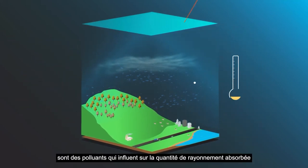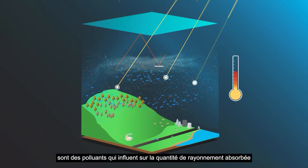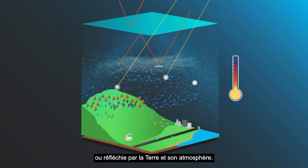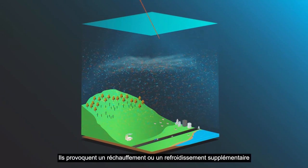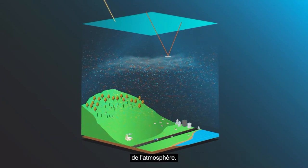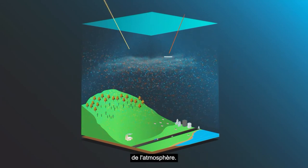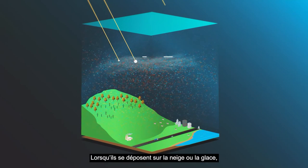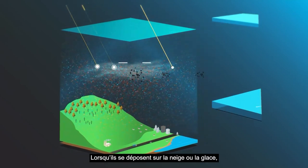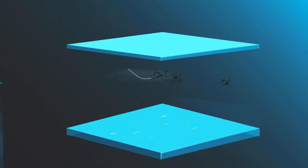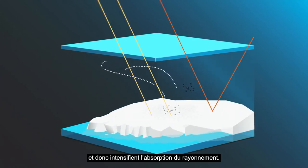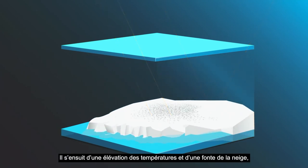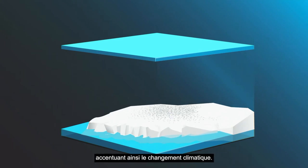Atmospheric aerosols are air pollutants that impact the amount of radiation absorbed or reflected by the Earth and its atmosphere, causing additional heating or cooling of the atmosphere. When these aerosols are deposited on snow and ice, they darken their surfaces, resulting in more radiation being absorbed, leading to warmer temperatures and melting snow, exacerbating climate change.